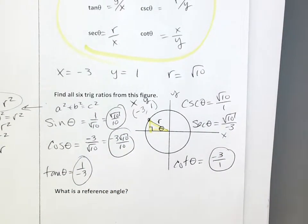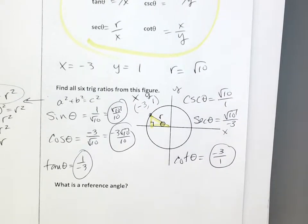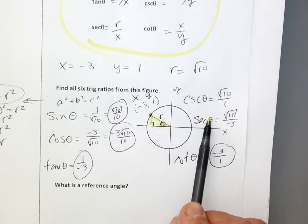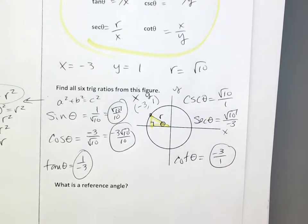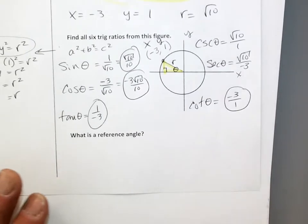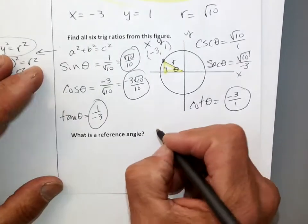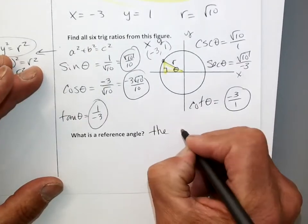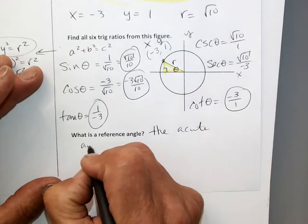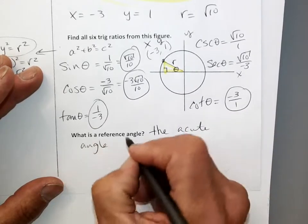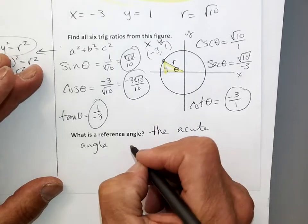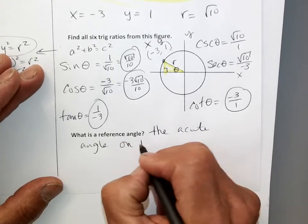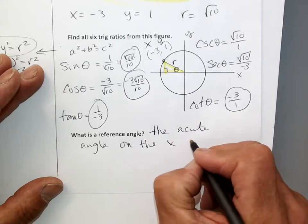Cosecant goes with sine, and secant goes with cosine — I know it's confusing because you'd think it'd be the other way around, but that's just how it is. Now, what's a reference angle? The reference angle is the acute angle on the x-axis.